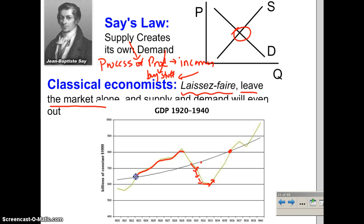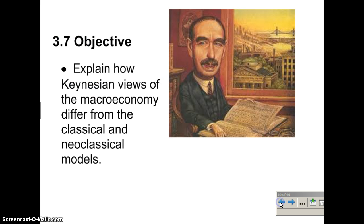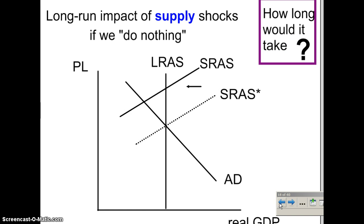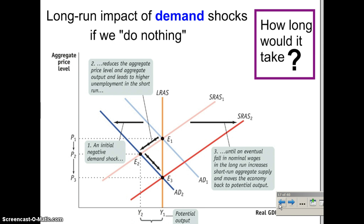Neoclassical economists still today believe that the government should not intervene, and that we should allow the economy to play itself out with supply and demand. They use a short-run, long-run model to explain how self-correction happens.